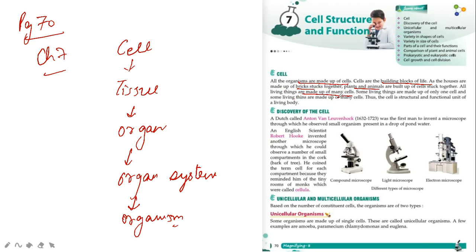All living things are made up of many types of cells. Some living things are made up of only one cell and some are made up of many cells. So the cell is the structural and functional unit of the living body. Who discovered the cell now?